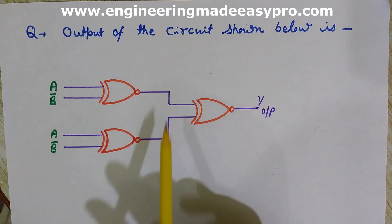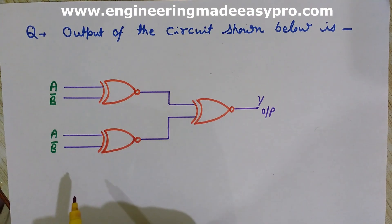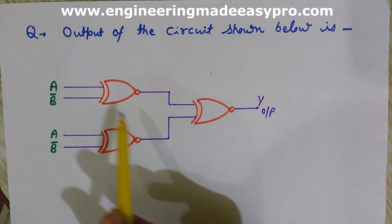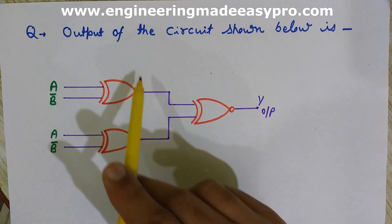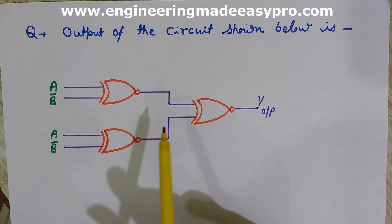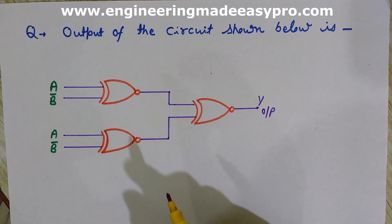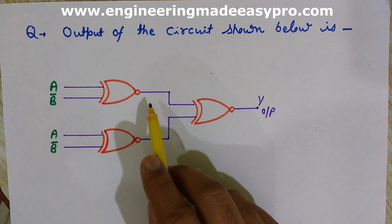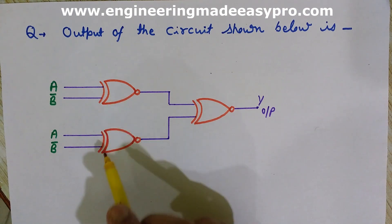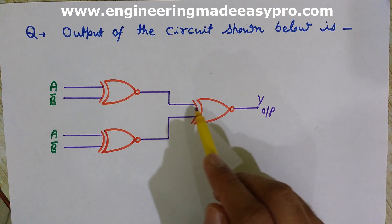If you do not observe the symmetry in the circuit, you may solve it using the wrong approach — computing A XNOR B-bar for each gate separately and then feeding those two outputs into the final XNOR gate. If instead we had a complex logic circuit with symmetrical sub-networks, the outputs of both those sub-networks would be identical. So first, check for symmetry before you start solving.